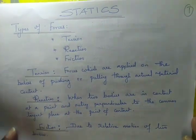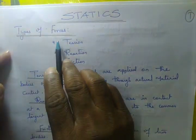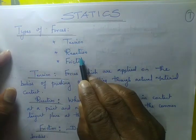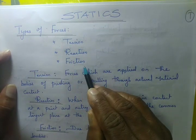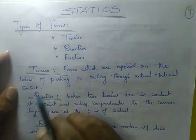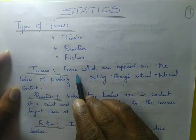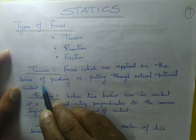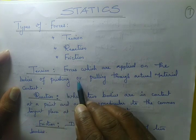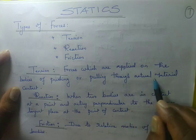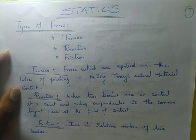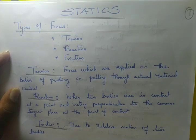First, types of forces. The types of forces in statics are tension, reaction, and friction. Tension forces are applied on bodies by pushing or pulling through actual material contact. We apply the force on the body — it may be pushing or pulling through actual material contact. That is called tension.